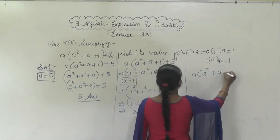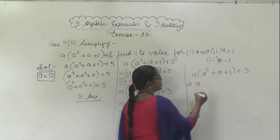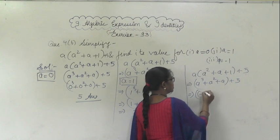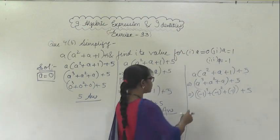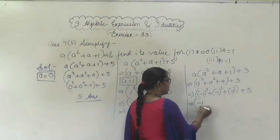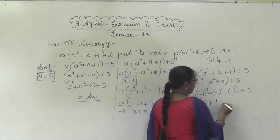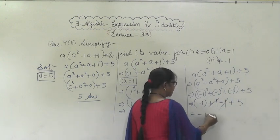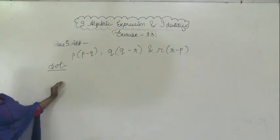For the third part, a = -1: substitute into a³ + a² + a + 5. We get (-1)³ + (-1)² + (-1) + 5, which is -1 + 1 + (-1) + 5. The +1 and -1 cancel, leaving -1 + 5 = 4. So the answer is 4.